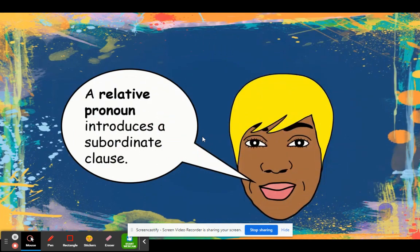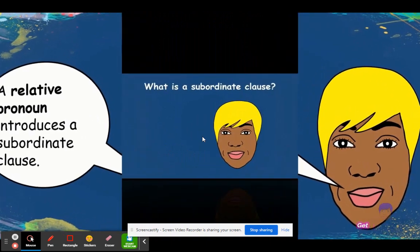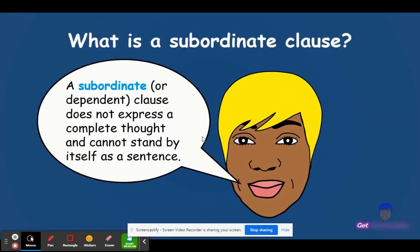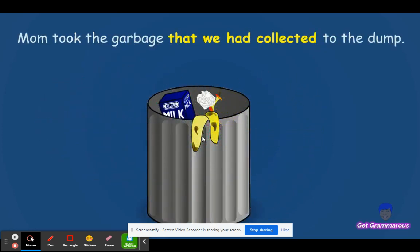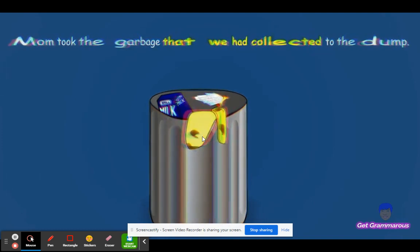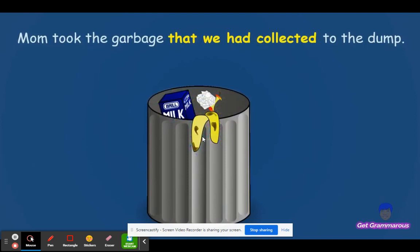A relative pronoun introduces a subordinate clause. What is a subordinate clause? A subordinate, or dependent, clause does not express a complete thought and cannot stand by itself as a sentence. For example: Mom took the garbage that we have collected to the dump.